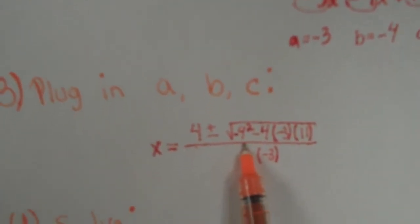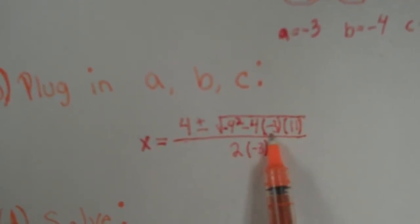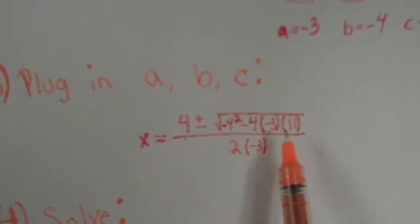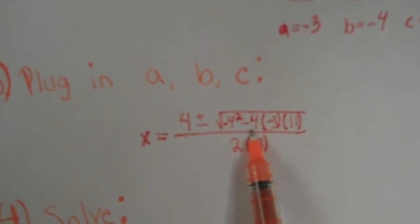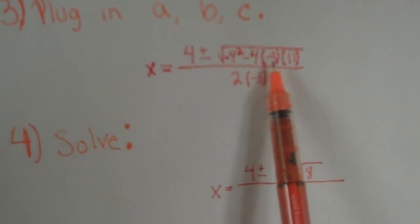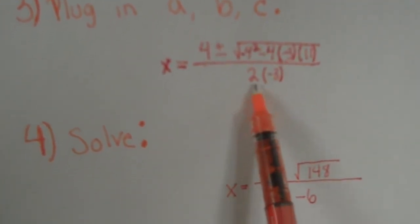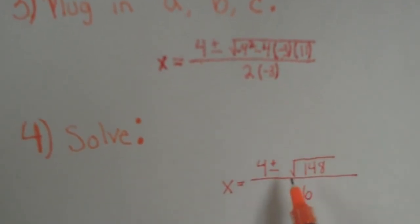Negative 4 squared is 16 and then 11 times negative 3 is negative 33. Negative 33 times negative 4 is 132. 132 plus 16 would equal 148. So I brought it down here. And then 2 times negative 3 is negative 6.